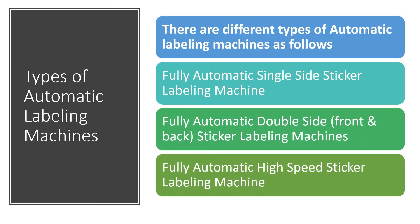Fully automatic machines can again be divided into three categories: fully automatic single side sticker labeling machines, which apply the label on only one side; double side machines, which apply labels on both the front and back; and high-speed sticker labeling machines. Single side stickers operate at normal speed, double side at a normal speed, and then we have the high-speed sticker labeling machines.